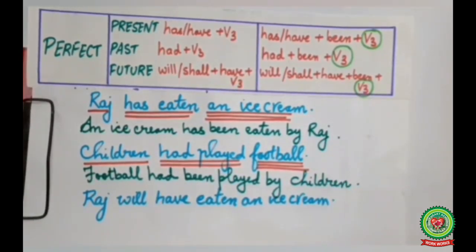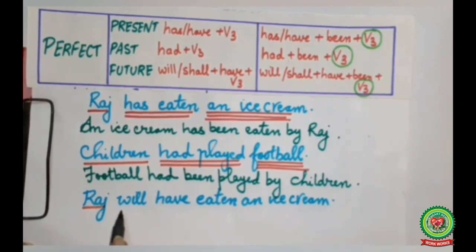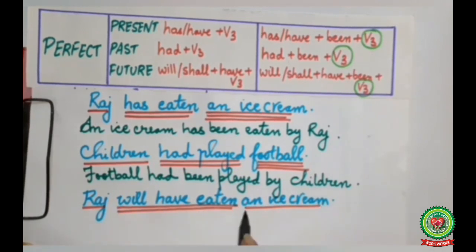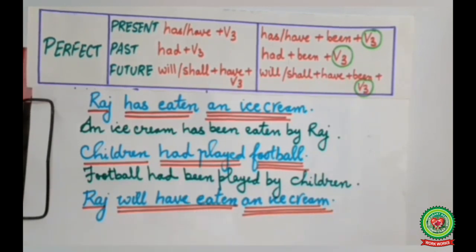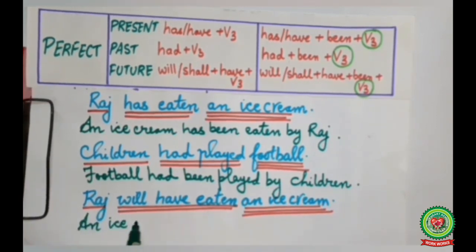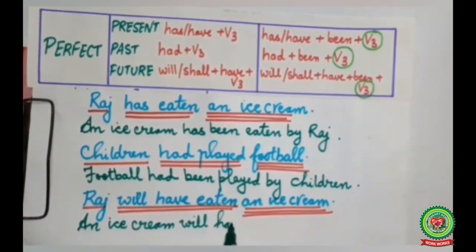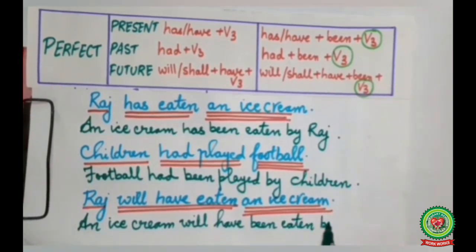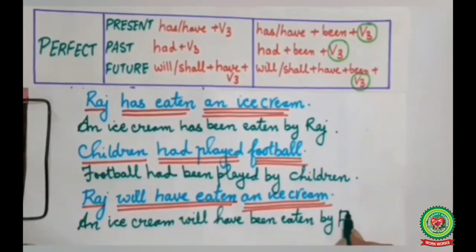Now the last sentence: Raj will have eaten an ice cream. Raj is the subject, will have eaten is the action word, an ice cream is the object. After have we add the word been. An ice cream will come in the beginning. The sentence becomes: An ice cream will have been eaten by Raj.